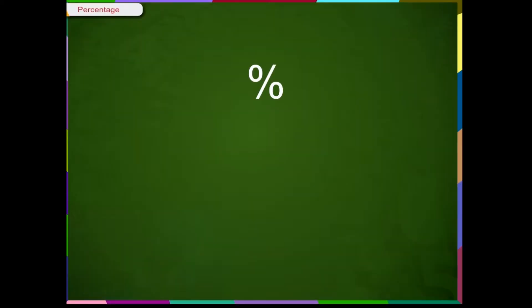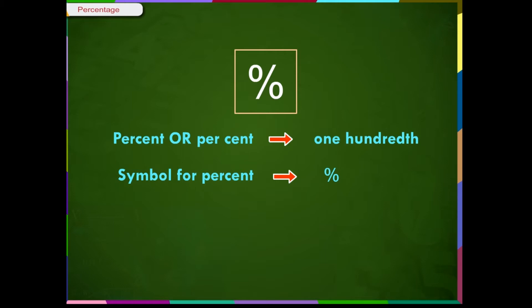Percentage. Very often, we come across this symbol. Percent means one hundredth. Therefore, one percent means 1/100 or one hundredth, and seven percent means 7/100 or seven hundredths. The words percent actually mean per hundred in Latin.